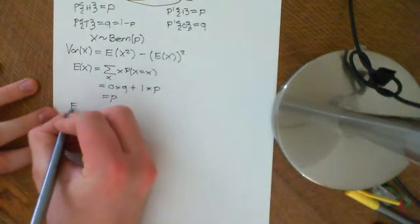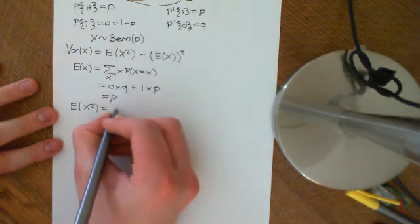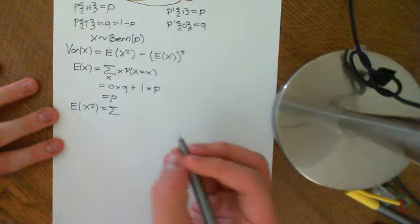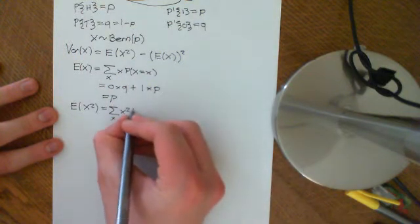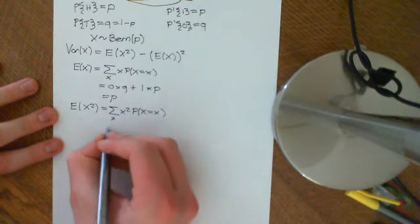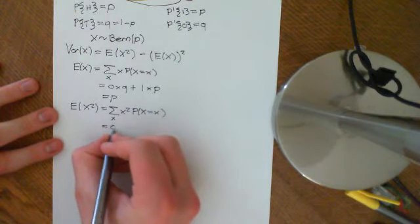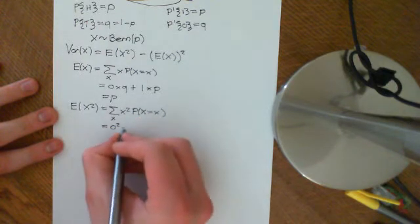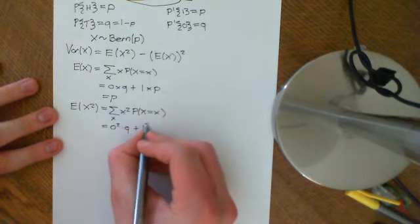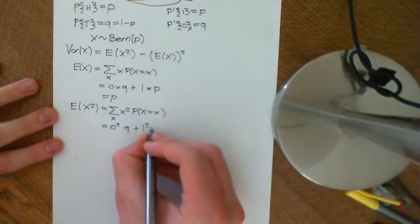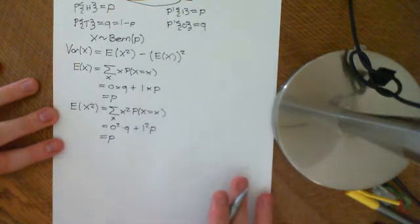Now what we want to know is what is the expected value of X squared. By the law of the unconscious statistician, which was proved in the previous video, this is the sum over x of x squared times the probability that X equals little x. So we get 0 squared times q plus 1 squared times p, giving us that the expected value of X squared is still p.